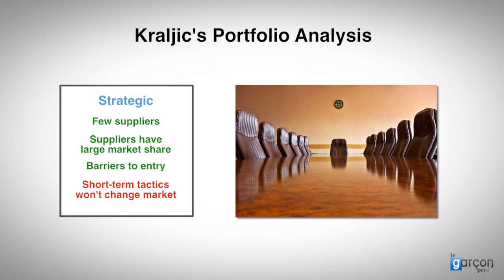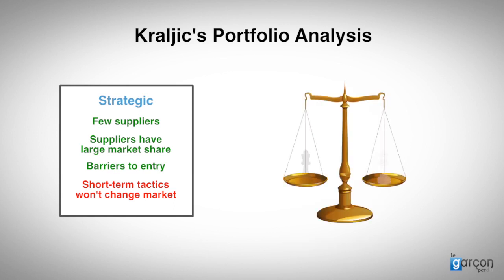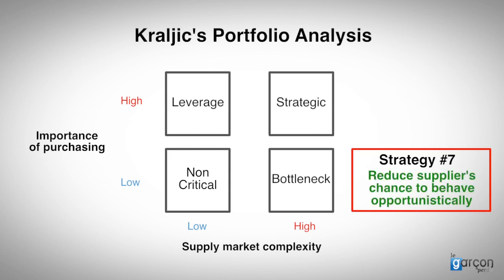The categories in the strategic quadrant are likely to be amongst the highest spend categories for the buyer, with high importance. Does this mean that the buyer is a big buyer and has lots of market power? Not usually. Unless you are the biggest buyer in the market, it is likely that the balance of power lies with the suppliers. Accordingly, strategy 7 seeks to reduce the chance for the supplier to behave opportunistically through entering into a cooperative relationship with the supplier.